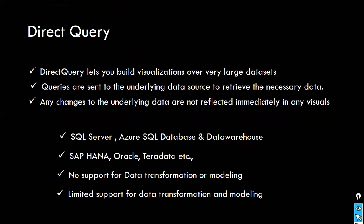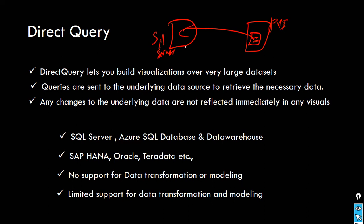The next mode is direct query. In direct query mode, the data will not be stored in the Power BI model because it's a direct connection to the data source. What Power BI does is query the data from the source system every time. For example, if this is your SQL Server and this is your Power BI, every time you use a visual chart, it carries the data from your source system directly. Hence, it doesn't require data refresh.